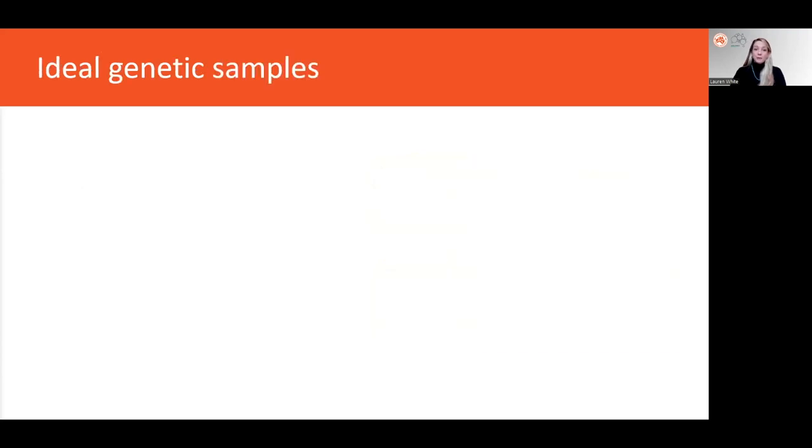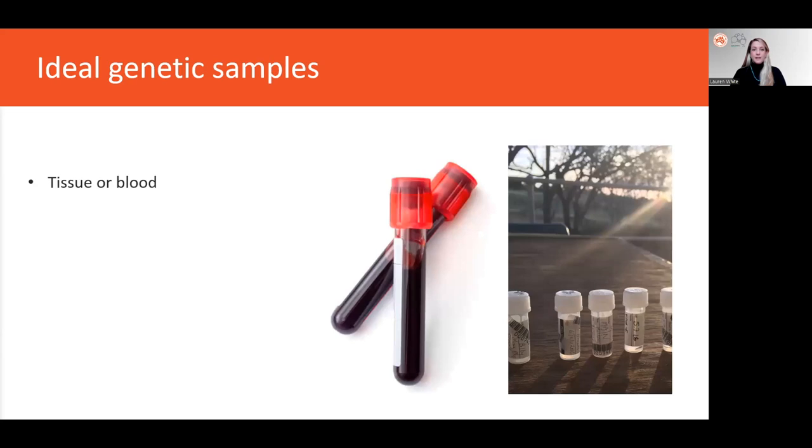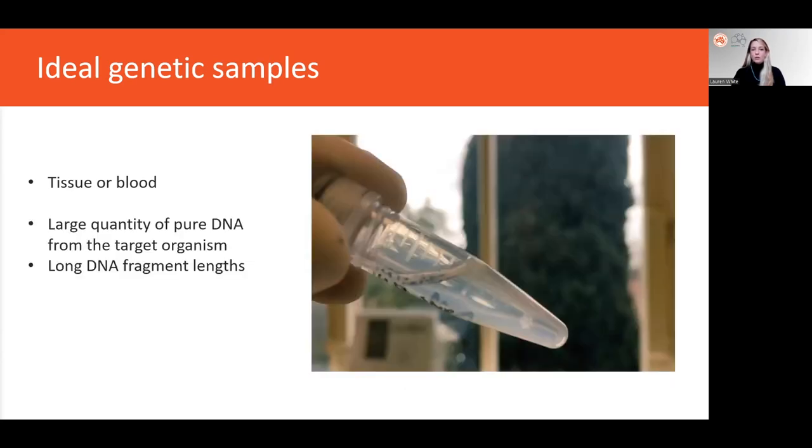So ideally, when undertaking a conservation genomic study of wildlife, researchers will collect high quality DNA such as tissue or blood. These types of samples typically provide a large amount of pure DNA from the study species, which is organized into long DNA molecules, and this makes them applicable to the full range of molecular methods of genomic data generation.